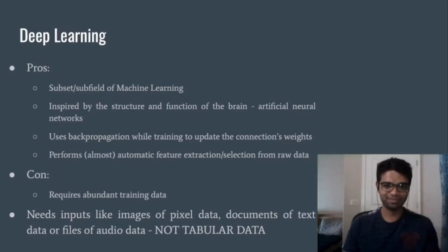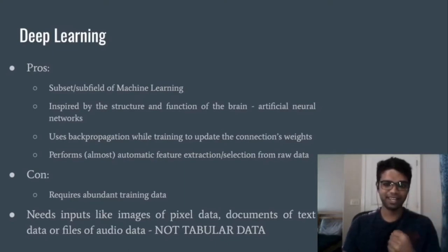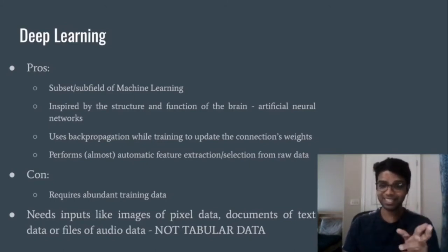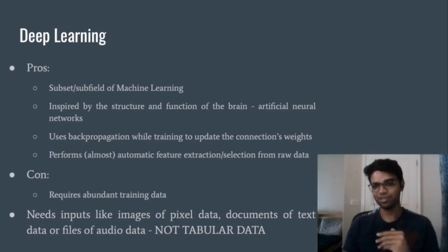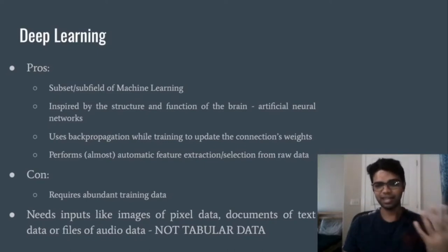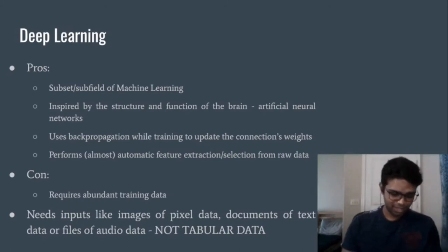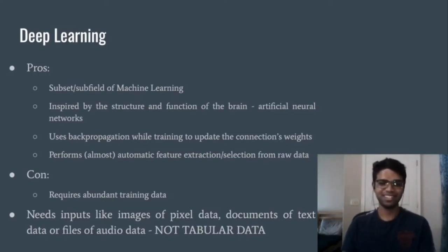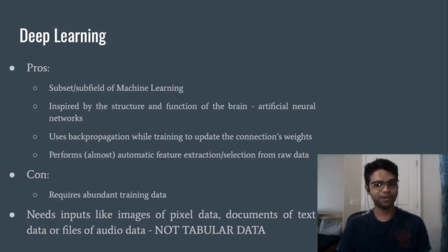The biggest advantage of deep learning is that it can perform almost automatic feature selection and feature extraction from raw data, and use that data to make predictions or generate new values — classification or regression respectively. But it is not all roses: there are some drawbacks too. The biggest one is that deep learning requires an abundant amount of training data.